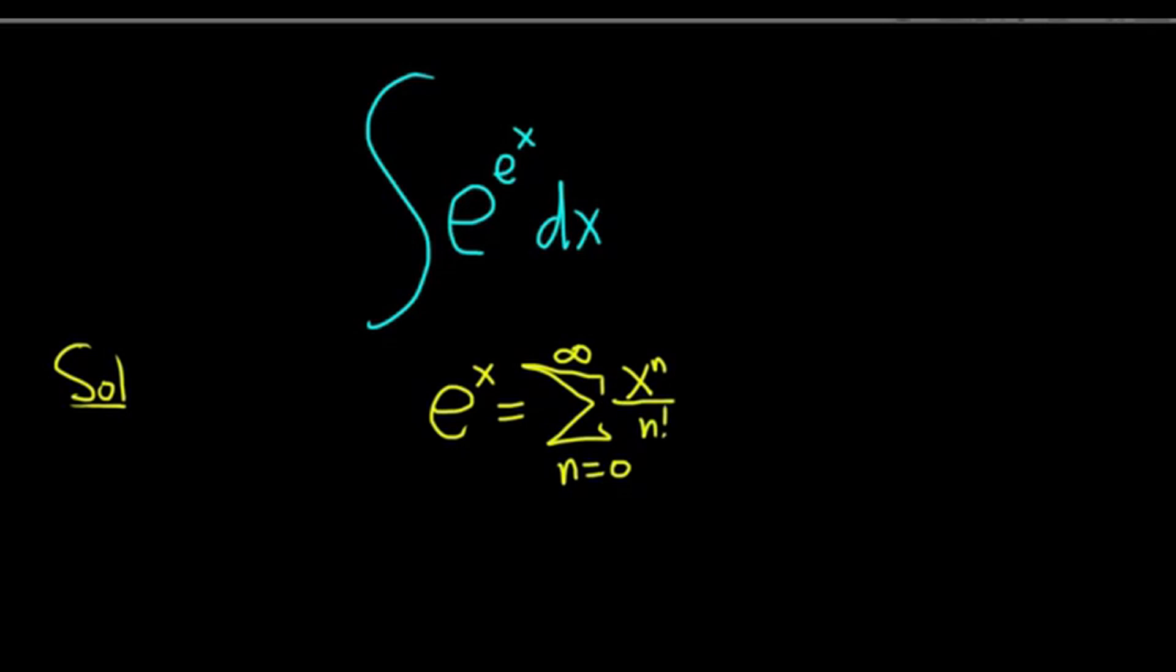In this problem, we have e to the e to the x. So we're just going to replace x with e to the x. We'll do that in both pieces here. All of our x's are going to become e to the x's.